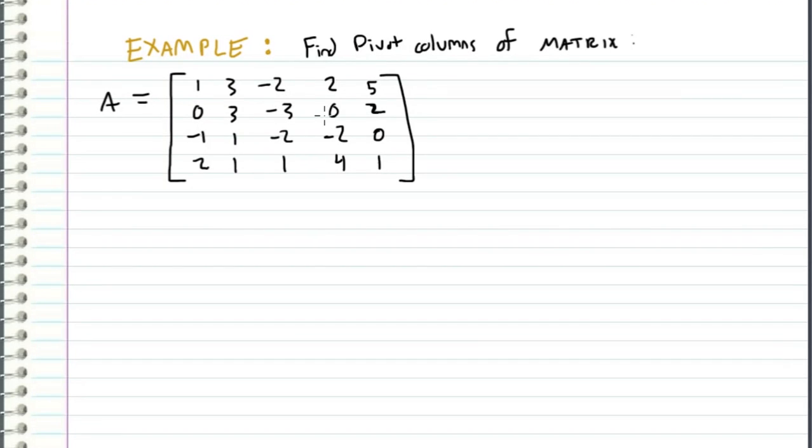In this video, I will be finding the pivot columns of this matrix. So in order to find the pivot columns, we reduce this matrix into a row echelon form or an upper triangular form and we take the first non-zero entries of each row.